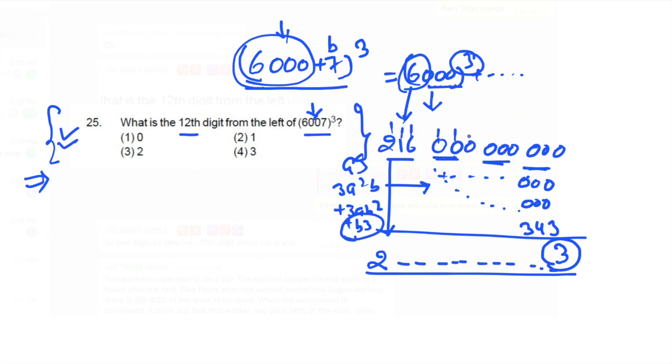The first, second, third, fourth, fifth, sixth, seventh, eighth, ninth, tenth, eleventh, twelfth - the twelfth digit from the left-hand side would be the unit digit only. So the answer of this question is 3, and 3 is the answer.